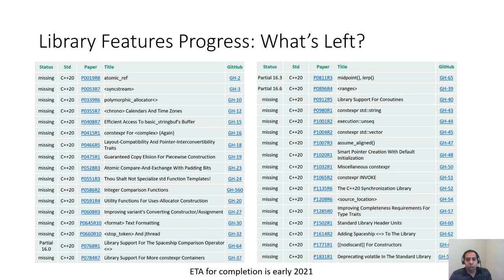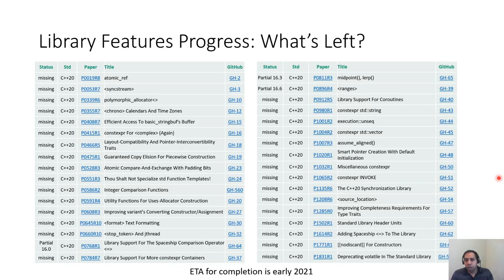So the features I've been talking about are all those that we have, together with the community, implemented. Here are all the features left — around 30-plus features representing about 30 percent of the library. Based on the current PRs in the pipeline on GitHub and the number of contributions made so far, including by the MSVC team and everyone else, C++20 features will probably be completed by early next year.